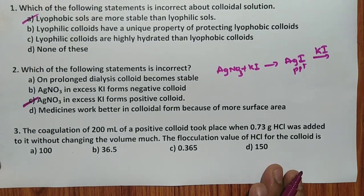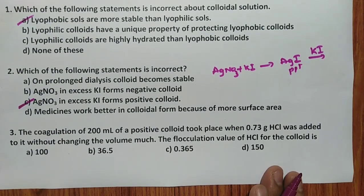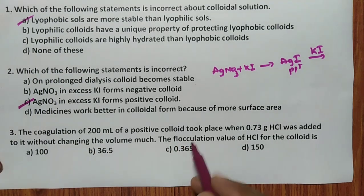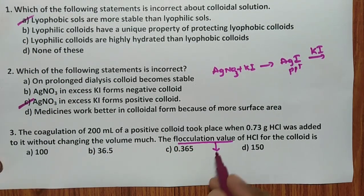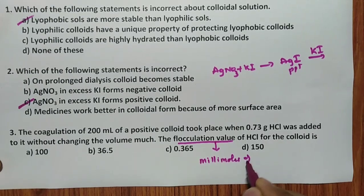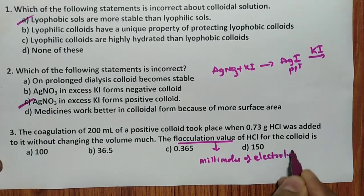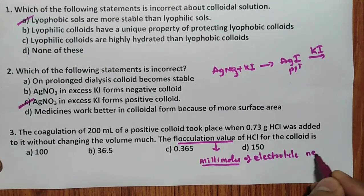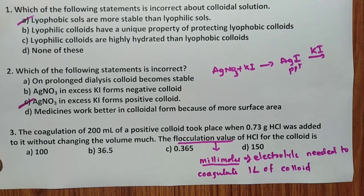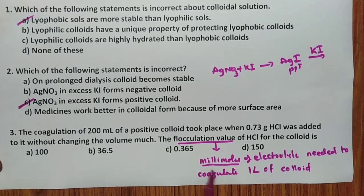The third one: coagulation of 200 ml of positive charge colloid take place when 0.73 gram of HCl was added without changing the volume, flocculation value they are asking. Flocculation value is nothing but millimoles of electrolyte needed to coagulate one liter of colloid. This is very important point.